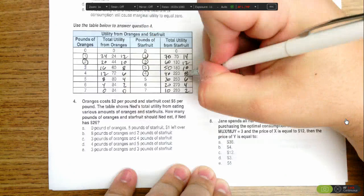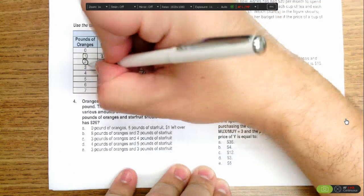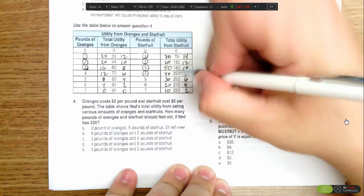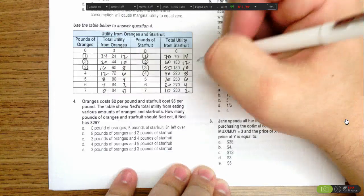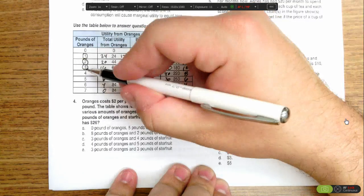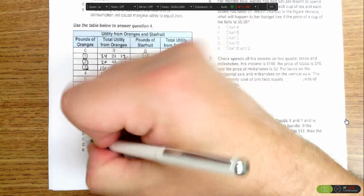He can buy the fourth, because that's eight, and he's indifferent with the third orange. So he spent $26, and that would then be the answer, is that he would want to buy three pounds of oranges and four pounds of star fruit.